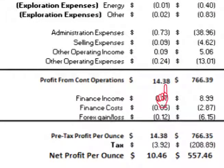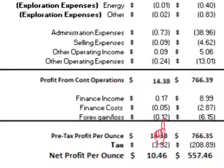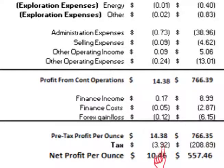Subtracting the exploration and miscellaneous costs from the gross profit of $18.56 per ounce gives a profit from continuing operations of $14.38 per ounce. There was income from financing of $0.17 per ounce, cost from financing of $0.05 per ounce, and additional costs from foreign currency hedges of $0.12 per ounce. Adding these together, the pre-tax profit remains $14.38 per ounce.